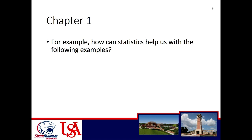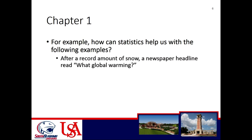Think about these examples of how statistics can help. After a record amount of snow, a newspaper headline read 'What Global Warming?' You could collect data on temperatures across years, months, and days, then perform analyses to see whether the trend is still going up — whether global warming is still happening — even though there might have been a single dip where the temperature got colder or a single bad snowstorm. Just because there was a snowstorm doesn't mean on average there is no global warming, but you need the data and statistics to support that.